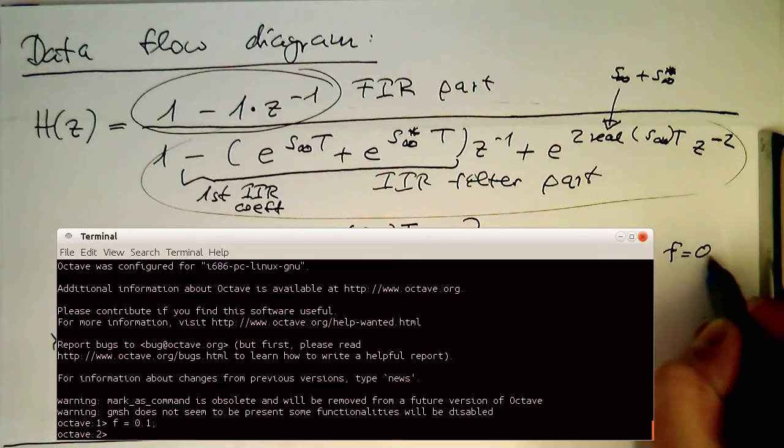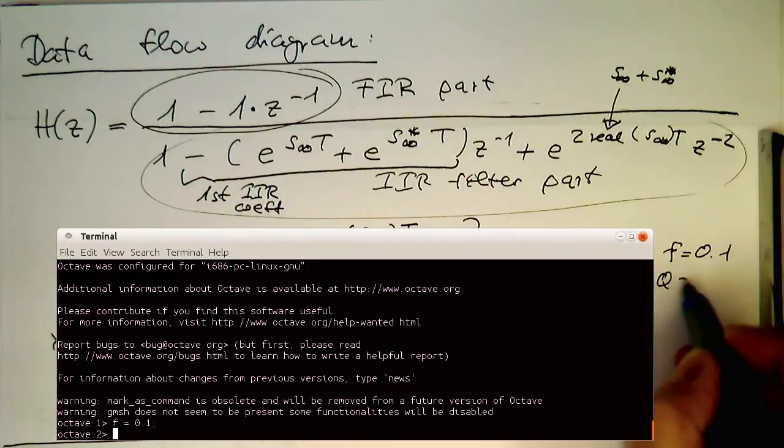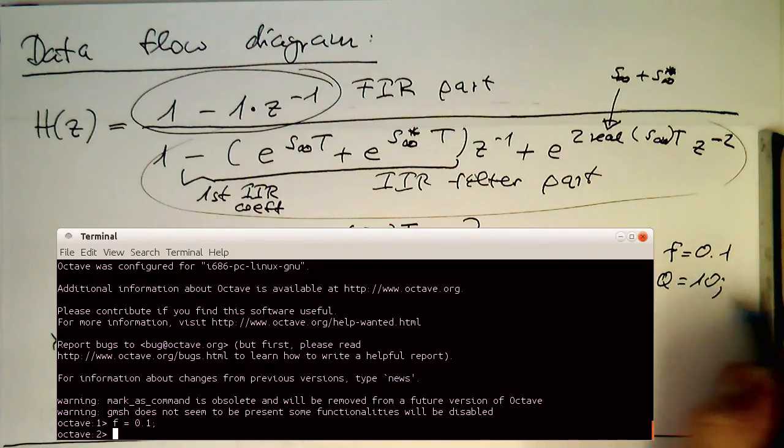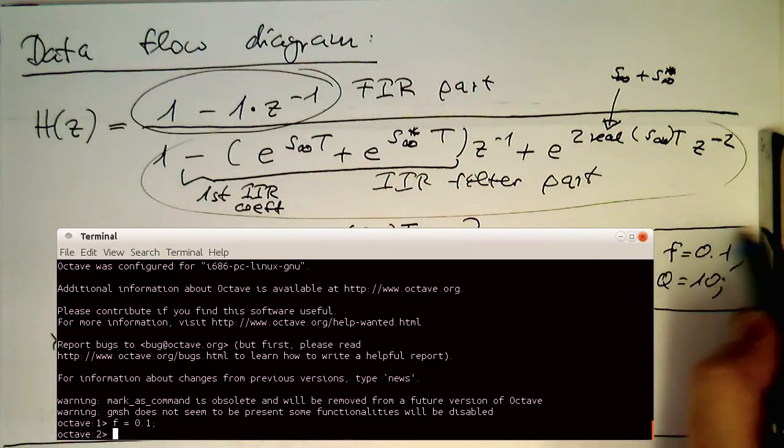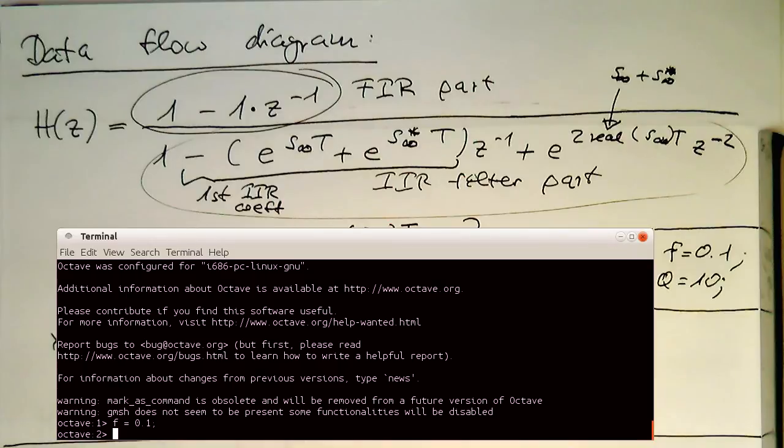F is 0.1 and Q-factor, let's set this to 10 for our resonator and try that out. Okay, so F 0.1, Q is 10.